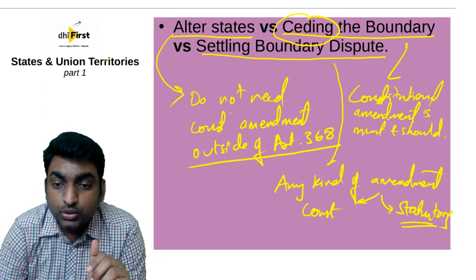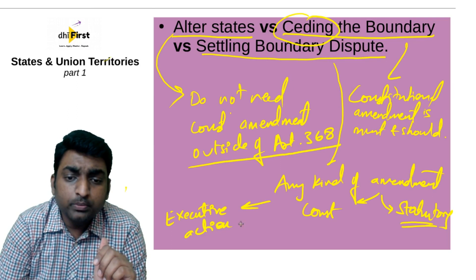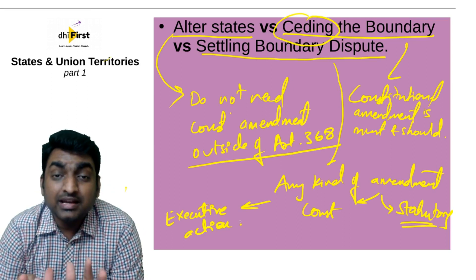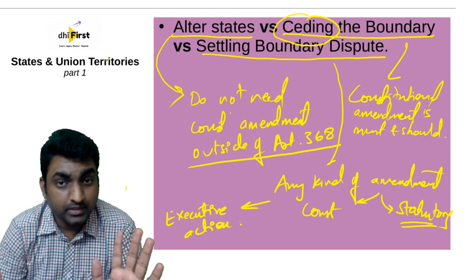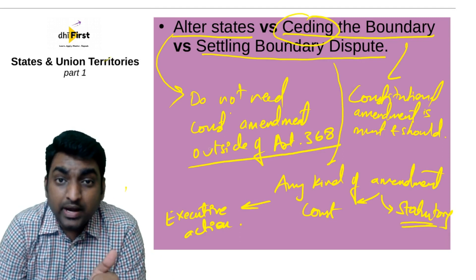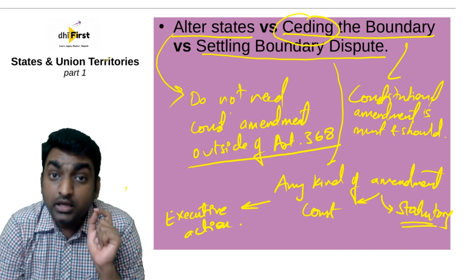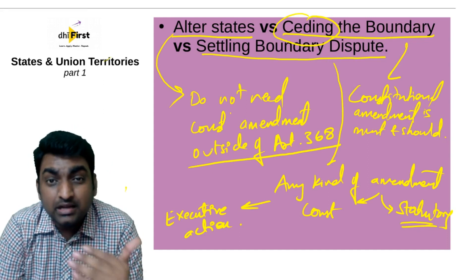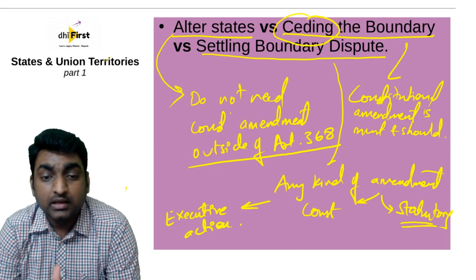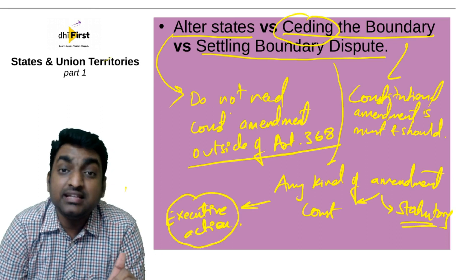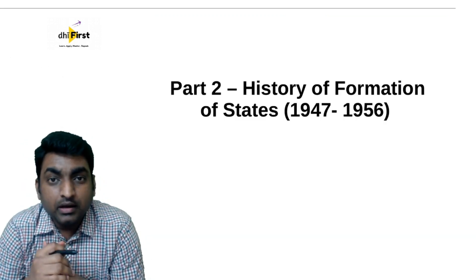Settling boundary disputes can be done through executive action — meaning the current cabinet can take the decision, and even parliament's decision is not required. To summarize: altering states requires parliament but not special majority; ceding the boundary requires constitutional amendment and special majority; settling a boundary dispute requires only executive action by the cabinet. With this, we finish part one and will continue with part two.